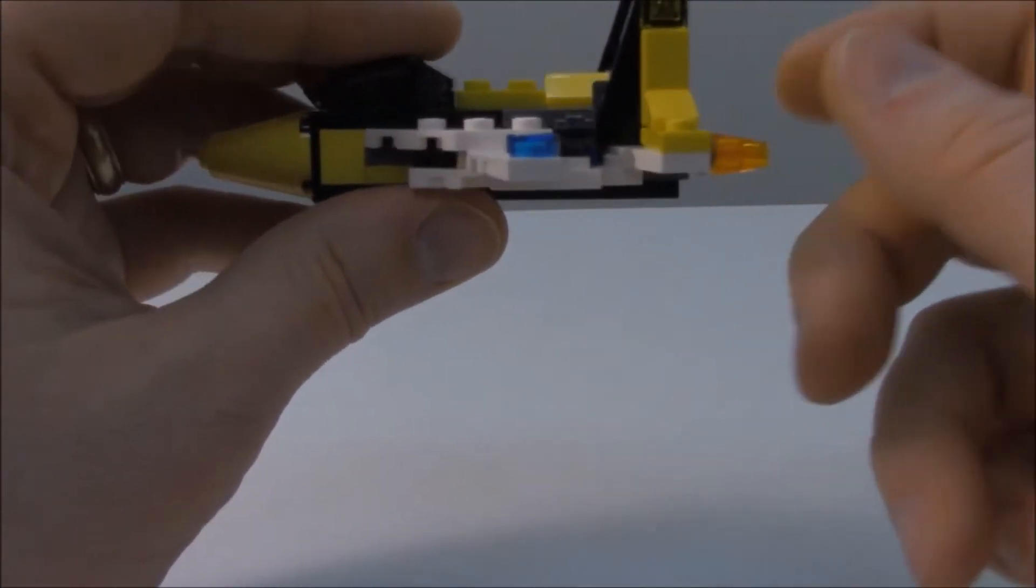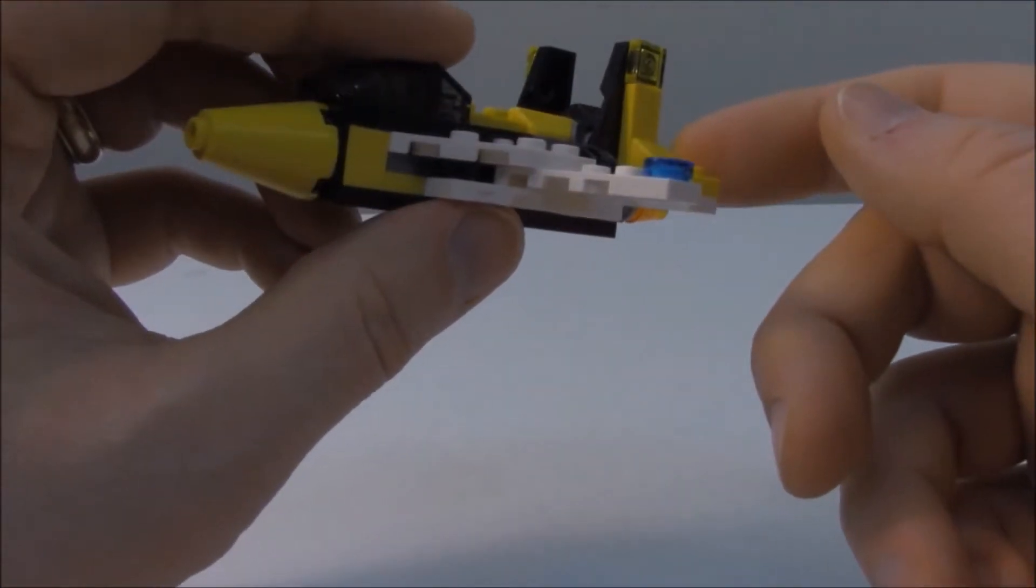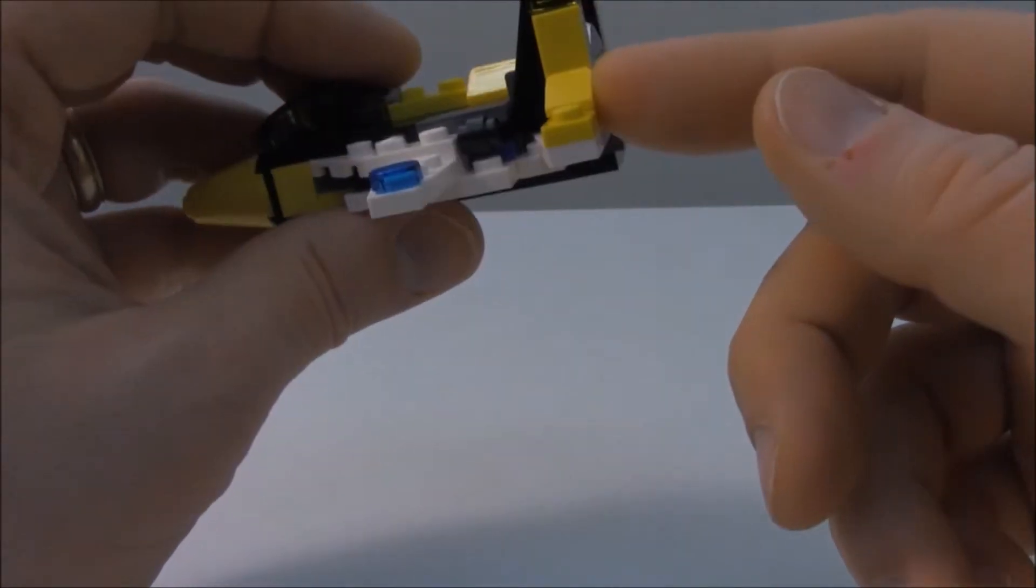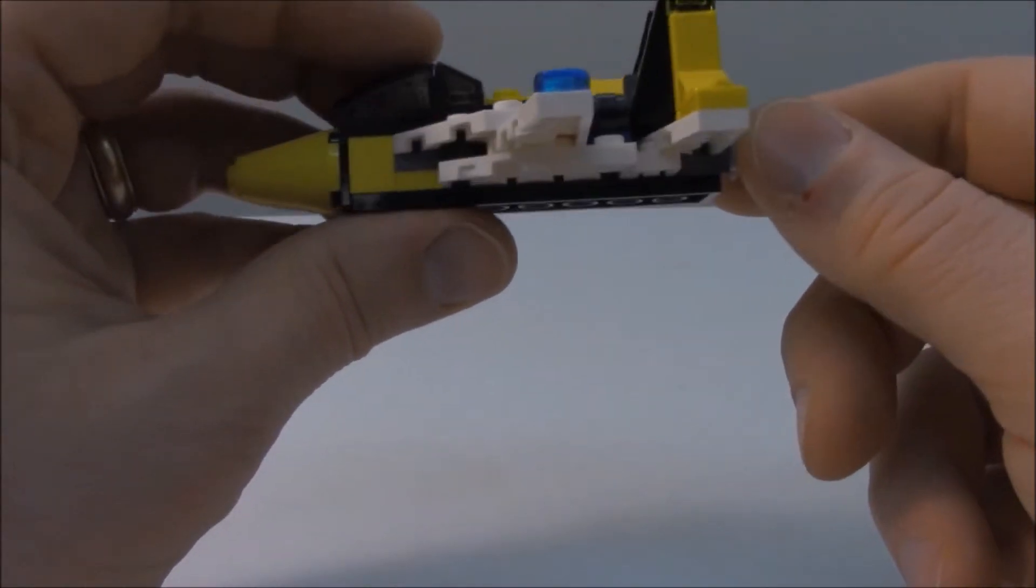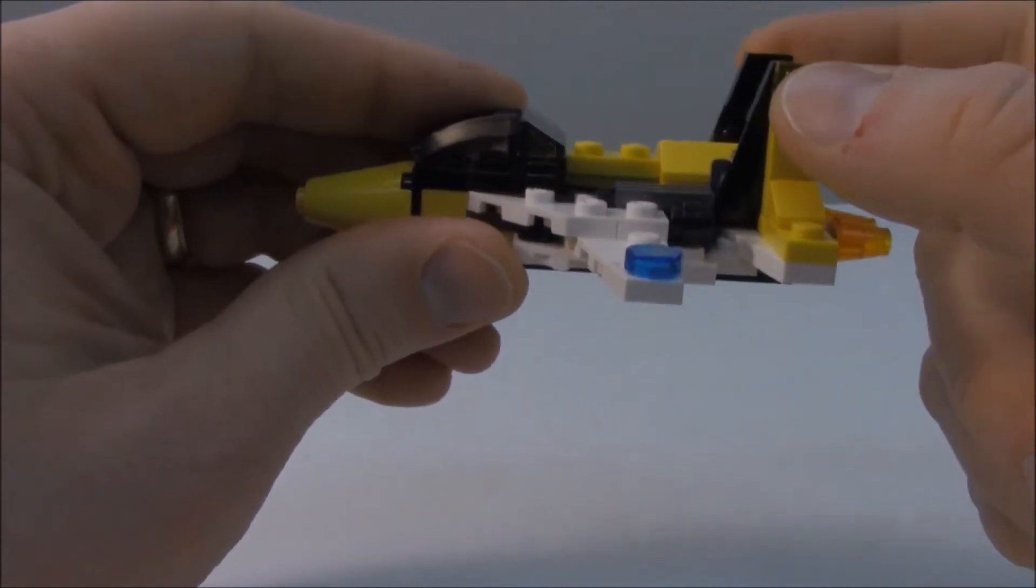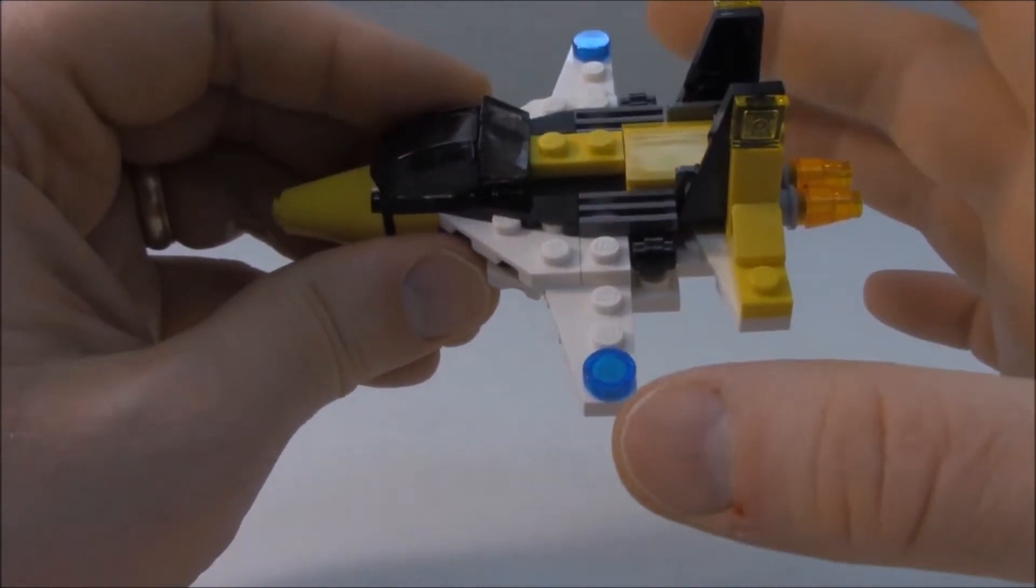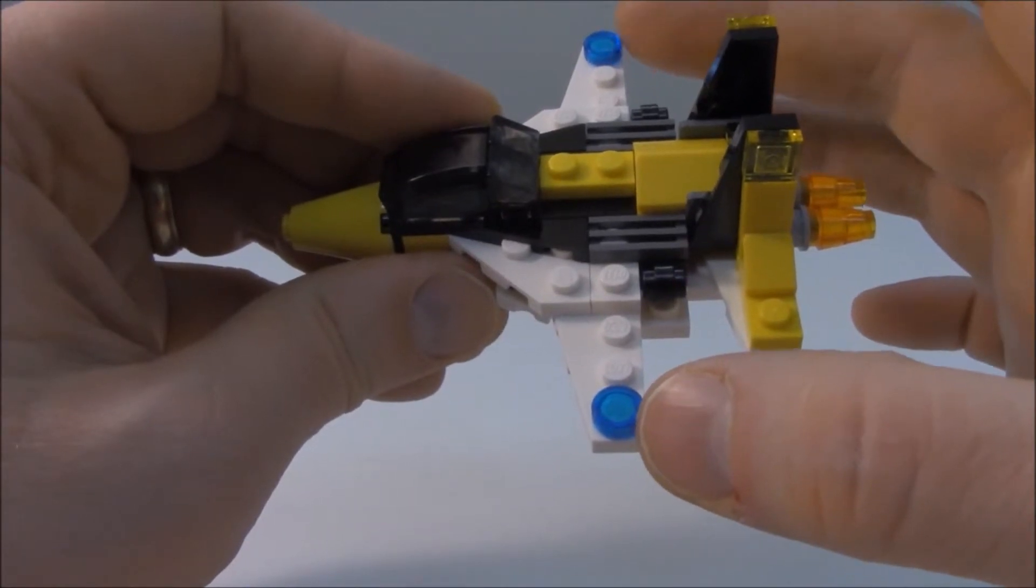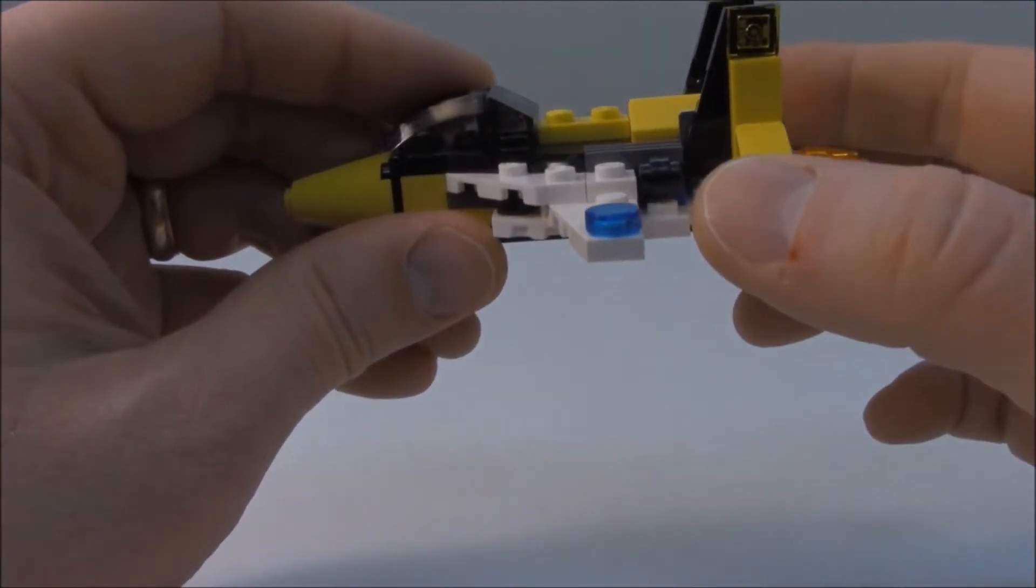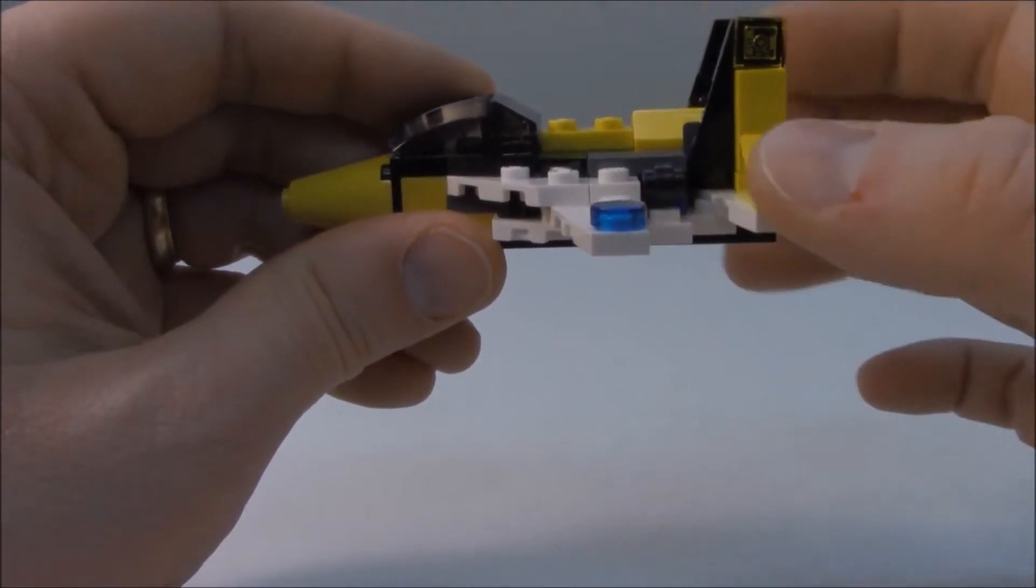Using some yellow sloped one-by-one pieces, your cheese wedges, if you will. They added some flush square one-by-one yellow pieces. And you have your two one-by-one circle flush blue pieces on the top of the wings so you can have some running lights.